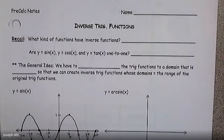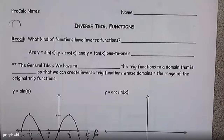Inverse trig is different than reciprocals, so we're not looking at cosecant, secant, or cotangent. We're going to look at something like sine inverse, cosine inverse, and tan inverse today. But we have to recall what types of functions have inverses to begin with.